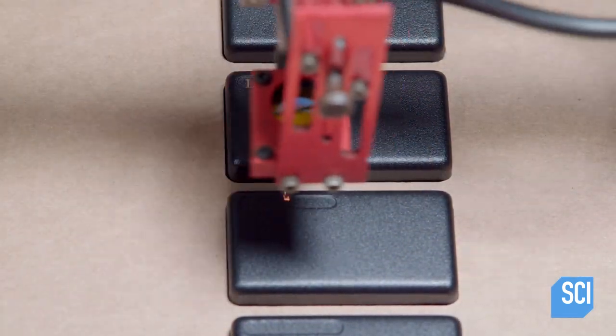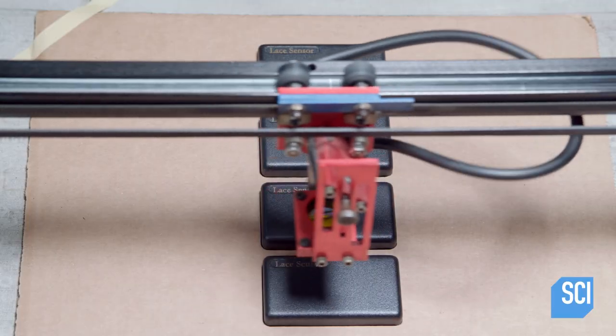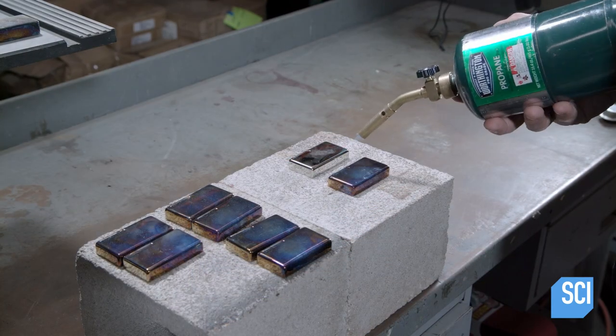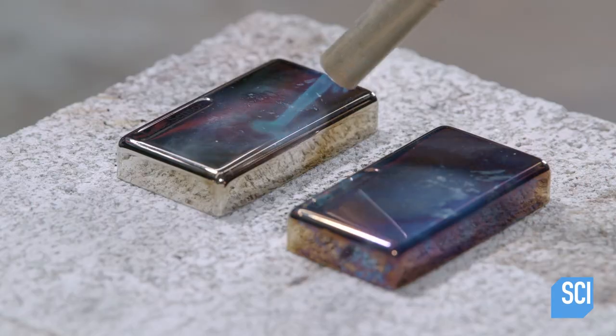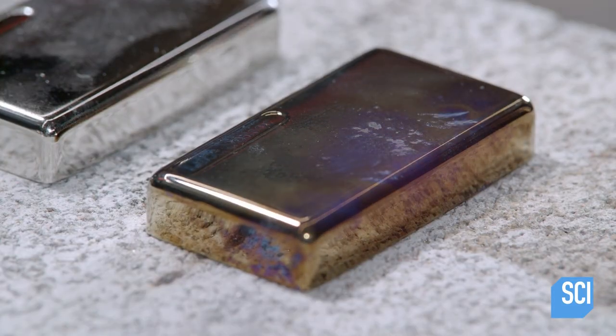Moving on to the pickup's outer casing, a laser engraves the trade name into the steel. A burnt chrome finish is also an option. Burning chrome casing causes a bluish discoloration that adds visual interest.